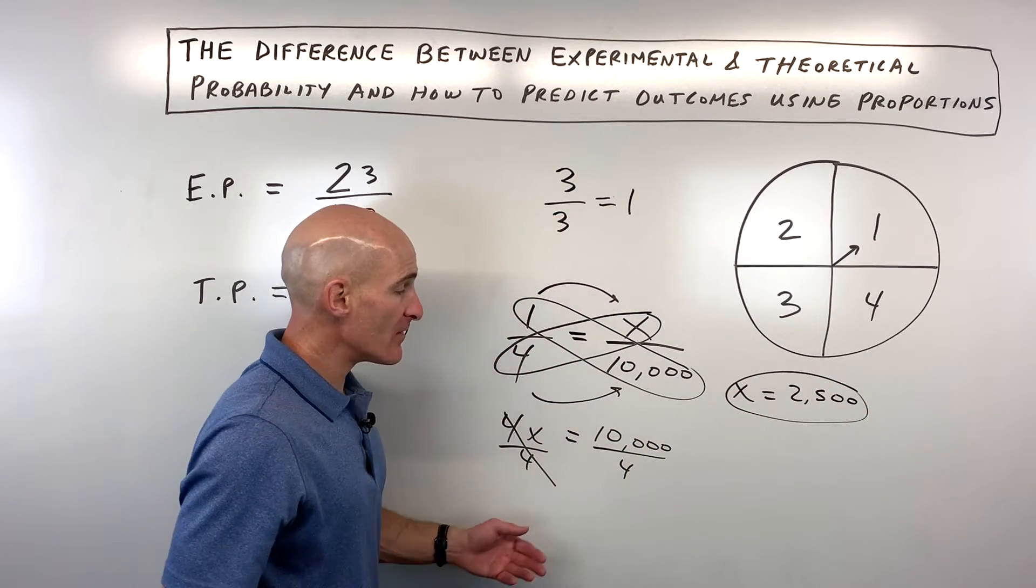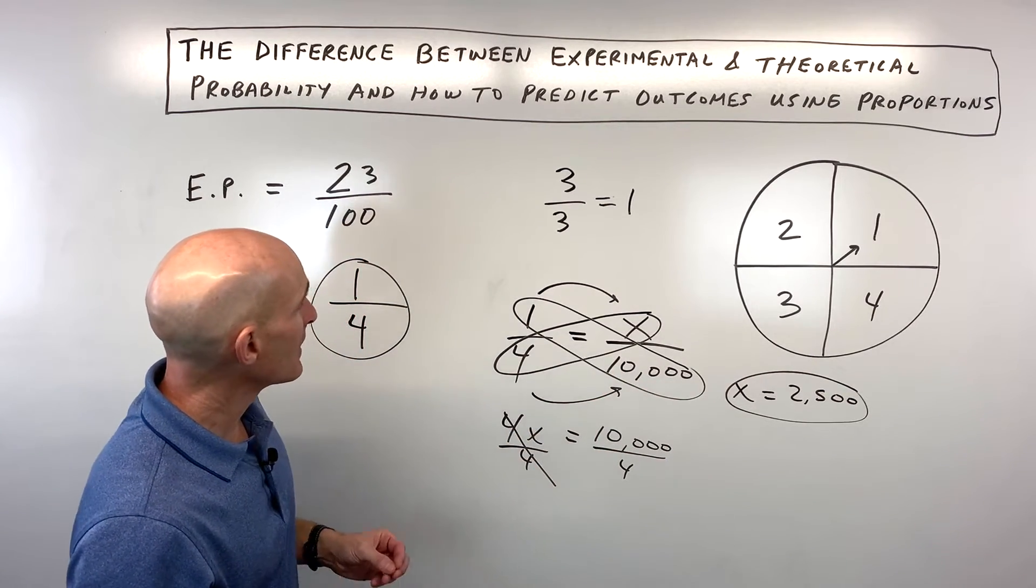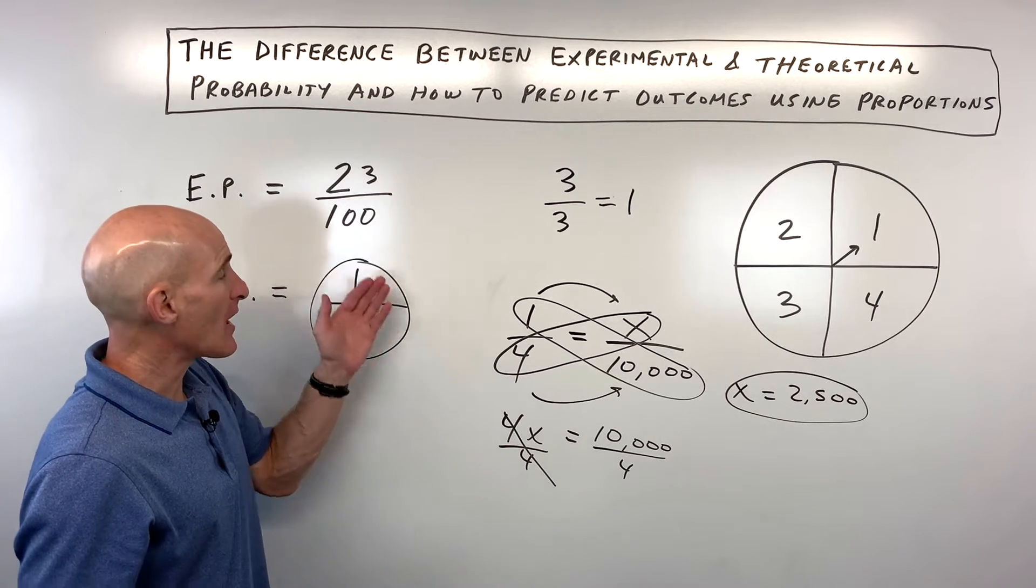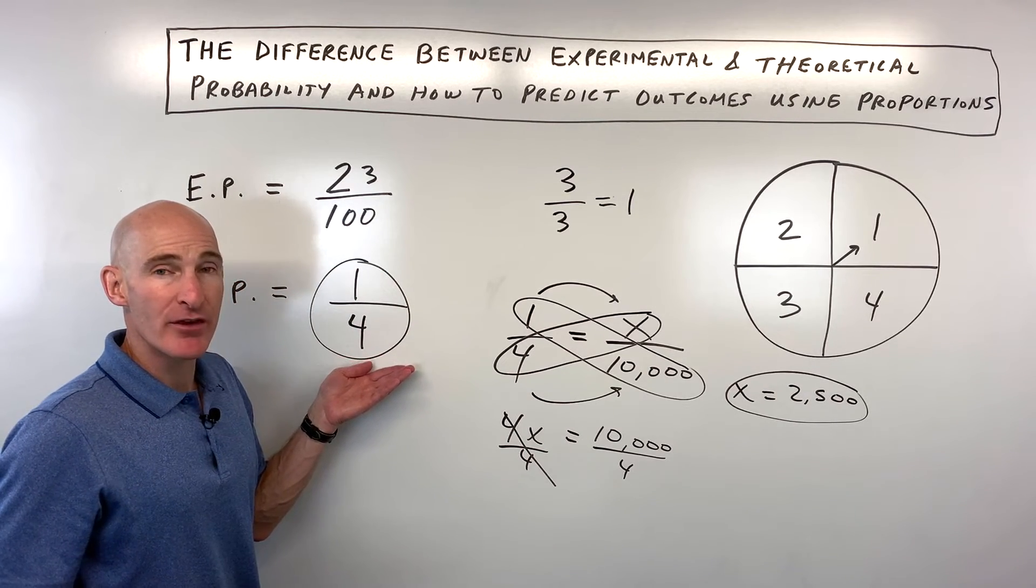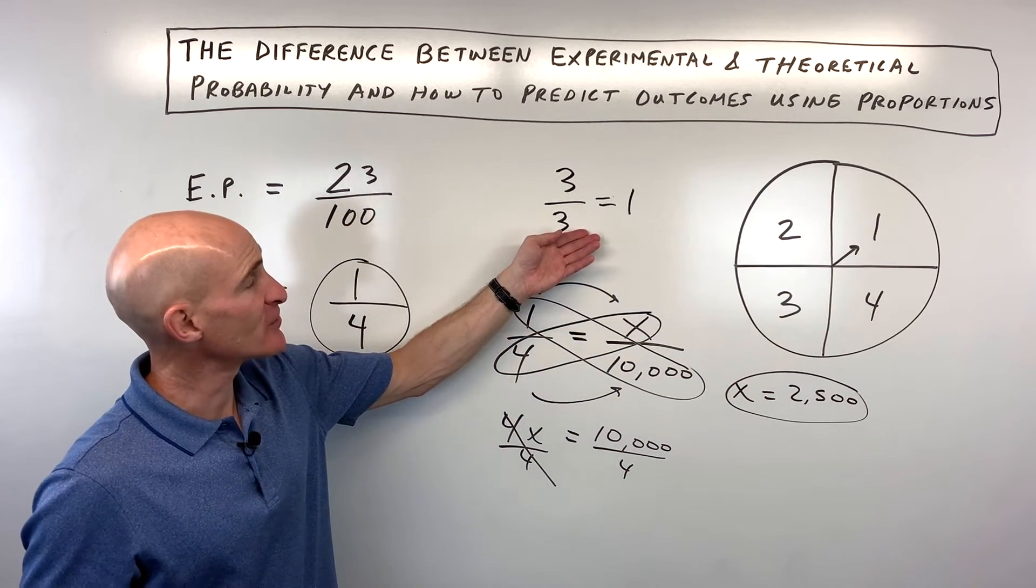Now, this is a sufficiently large number of spins. So you're going to notice that the experimental probability is going to start to approach the theoretical probability, assuming that this is a fair spinner. Again, like we did this first example, we spun it just three times, you might get all ones.